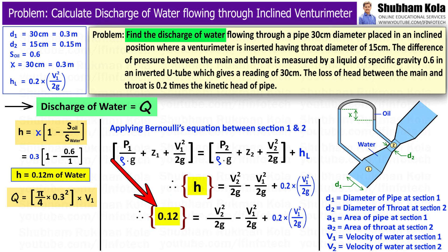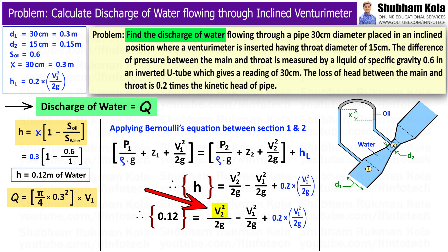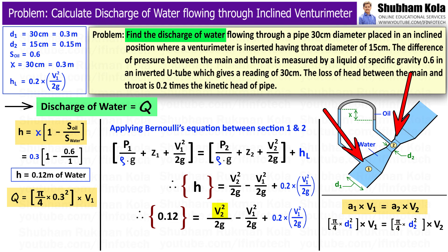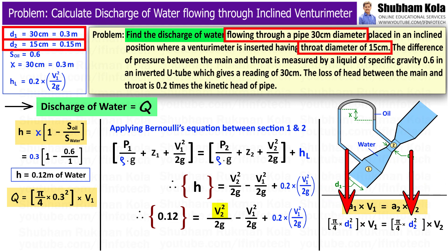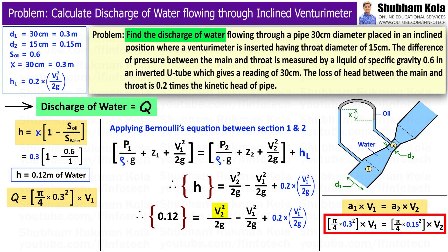In this equation, I will put small h equal to 0.12 m. Now for v2, I will apply continuity equation, a1 v1 equals a2 v2, where a1 and a2 are the areas of section 1 and 2. Area equals pi by 4 diameter squared, where d1 and d2 are given. By calculating this, we get v2 equals 4 v1.